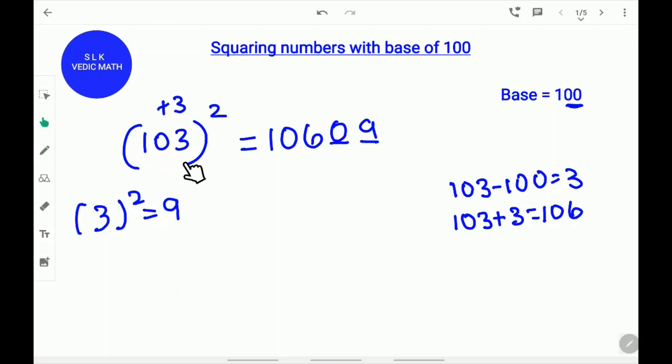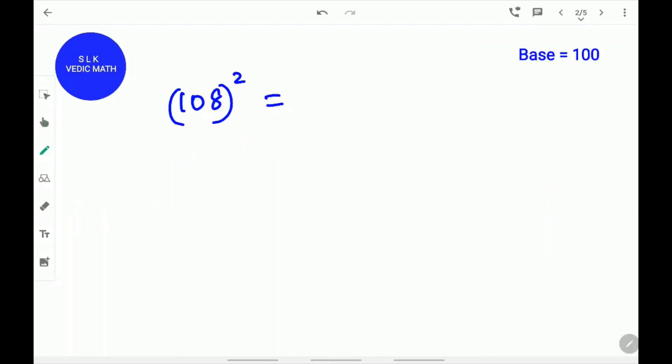103 square is 10609. Let's try another example.